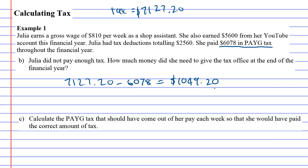That would be a bit scary for anyone if at the end of the year they found out they had to give a thousand dollars to the tax office. Now let's look at question C. Question C says: calculate the PAYG tax that should have come out of her pay each week, so that she would have paid the correct amount of tax. If she paid the right amount by the end of the year she would have paid $7,127.20, and because it comes out each week we divide that by 52 to figure out exactly how much she should have been paying.